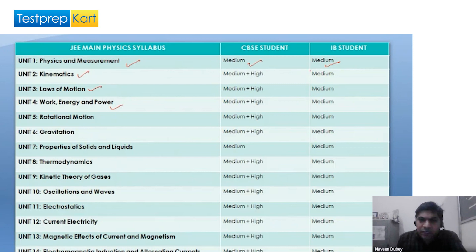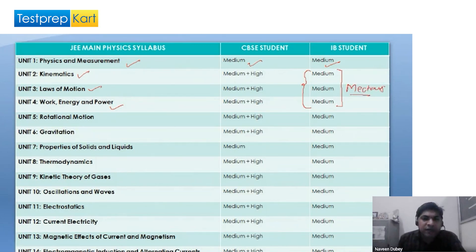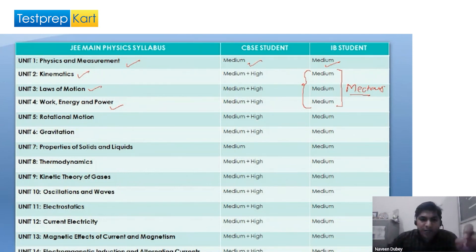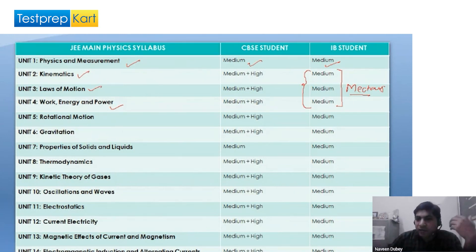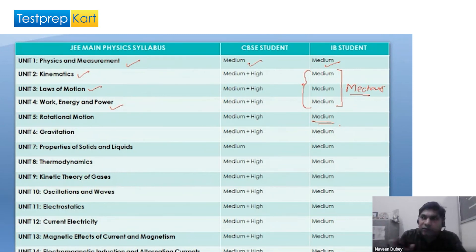In the IB syllabus, these three topics — kinematics, laws of motion, and work and energy — are included in a single unit named mechanics, with only a brief introduction. We do not get into very much detail of these topics. Similarly, rotation is one of the most significant topics in JEE Mains curriculum, where we generally encounter higher difficulty level problems, but in the IB syllabus more stress is placed on the concept of torques only, with no elaborated discussion related to moment of inertia or combination of rotational and linear motion.